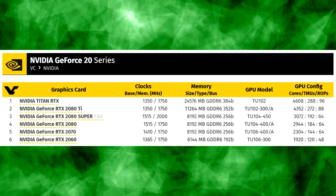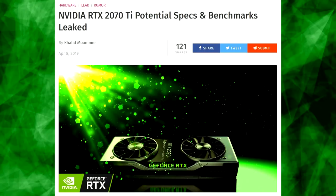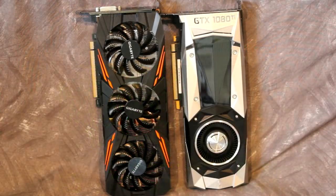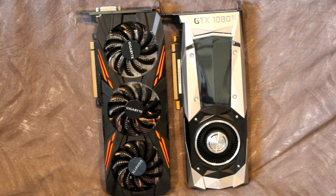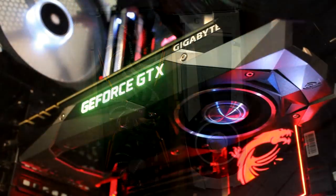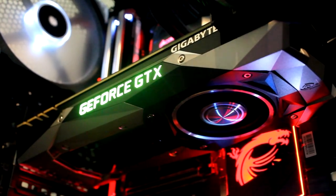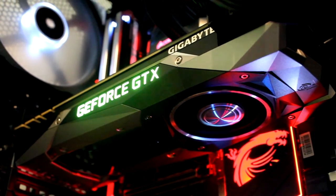It's a bit early to be making comments about the Turing GPUs, as more TI cards are most likely going to be added to the lineup, so I might save that for a future video. This video was more a historical look back at all the previous generation TI graphics cards that Nvidia has made and the ones that were special to me. I hope you enjoyed it — let me know in the comments which Nvidia TI graphics cards you've owned, and as always, I'll see you guys next time.